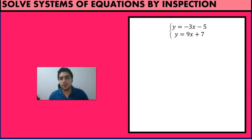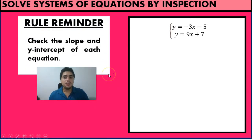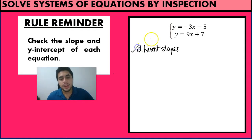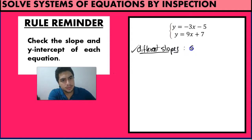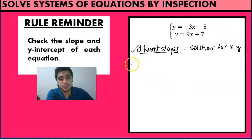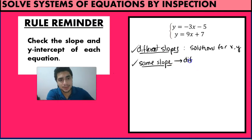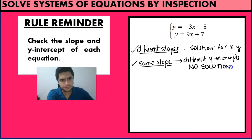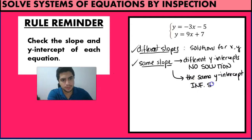We have a rule reminder here: we have to check the slope and the y-intercept of each equation. If we have different slopes, we are going to get a solution, because the two lines are going to cut at some point. If we have the same slope, it's kind of tricky — if they have the same slope but different y-intercepts, then we're going to have no solution.